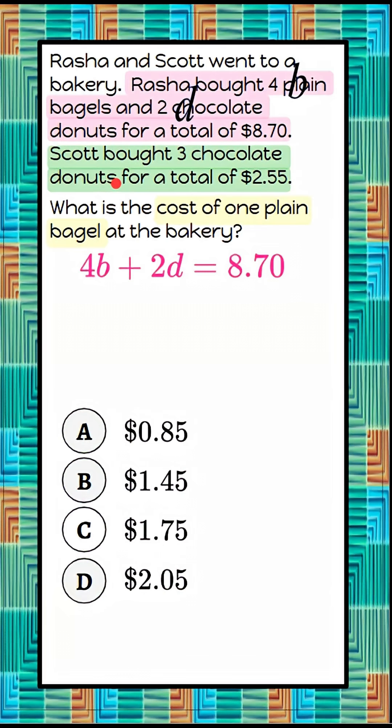Now we're going to look at what Scott did to understand our second equation. So Scott only bought donuts, so the variable here is D. That's the cost of one donut. They bought them at the same bakery, so one donut costs the same. So three times D is going to equal his total cost of $2.55.